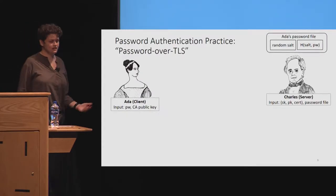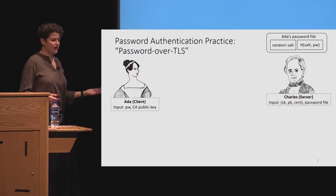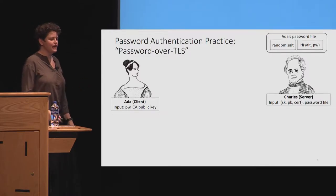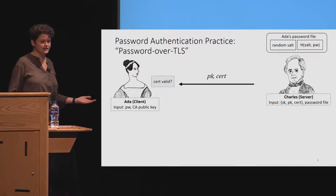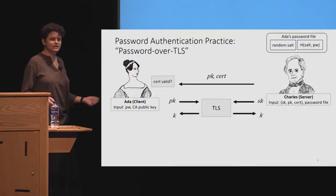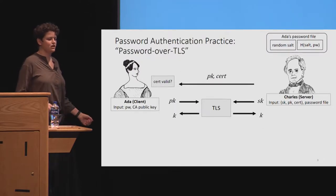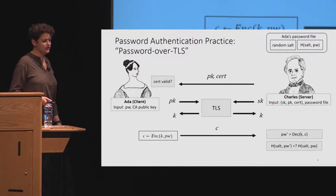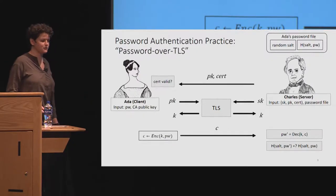How is password authentication done in practice now? It's basically just password over TLS. If we have a server, Charles, he has a password file which has a salt and a salted hash of the password. He's going to prove to Ada that he has the right public key using a certificate authority, and then they're going to use TLS to establish a shared session key, which is just a symmetric key. All of this has nothing to do with passwords yet. But then Ada is simply going to encrypt her password under that shared symmetric key. Charles decrypts it and checks if it matches the hashed password. So it's very simple.